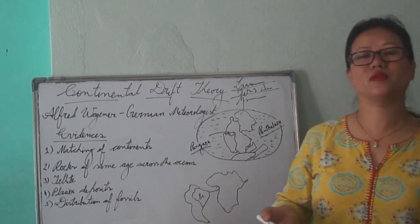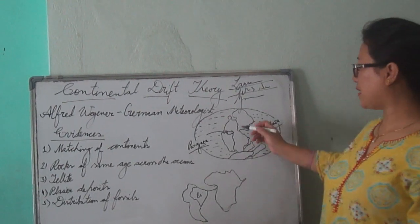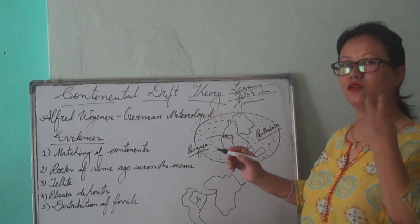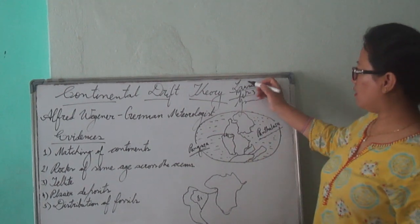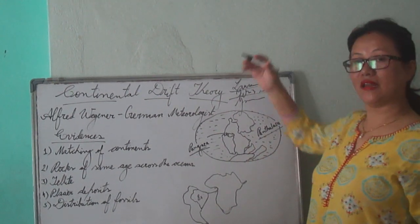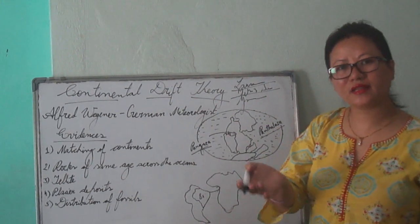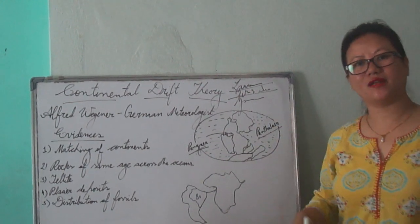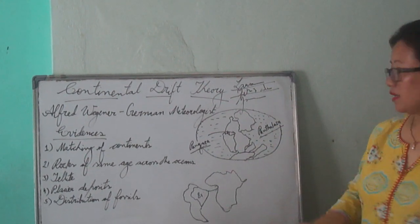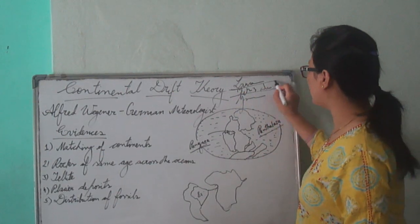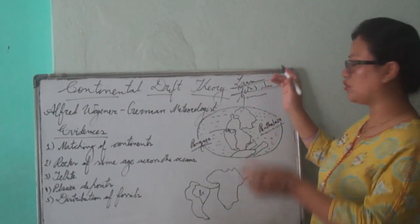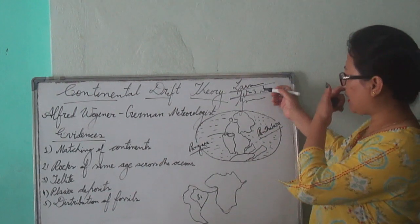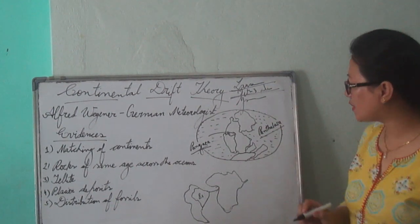Around 200 million years ago, this Pangaea started to split into two land masses. The land mass in the northern area was known as Laurasia, and the one in the southern part was known as Gondwana. The gap in between Laurasia and Gondwana was filled with water, and he gave it the name Tethys Sea.